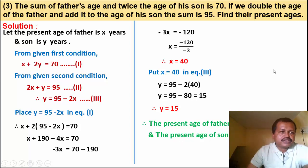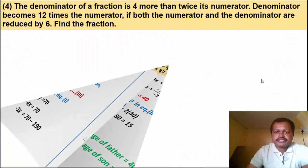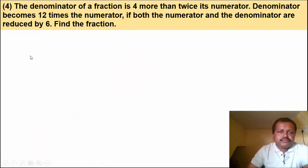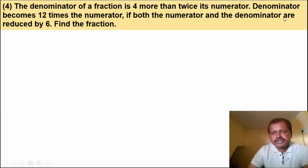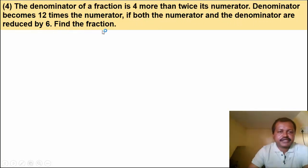Now example number 4: The denominator of a fraction is 4 more than twice its numerator. The denominator becomes 12 times the numerator if both the numerator and denominator are reduced by 6. Find the fraction.